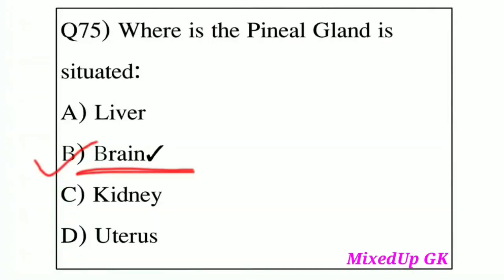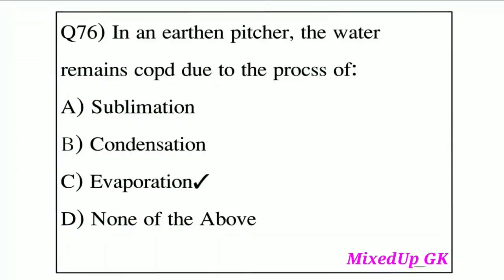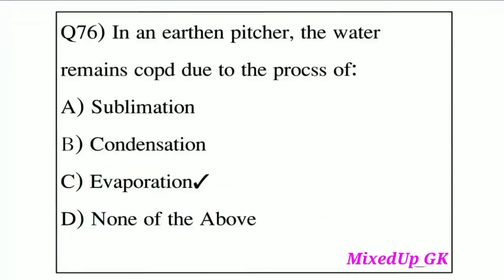Question number 76: In an earthen pitcher, the water remains cool due to the process of what? Option A: Sublimation. Option B: Condensation. Option C: Evaporation. Option D: None of the above. The answer is Option C, Evaporation. Water remains cool due to the process of evaporation.